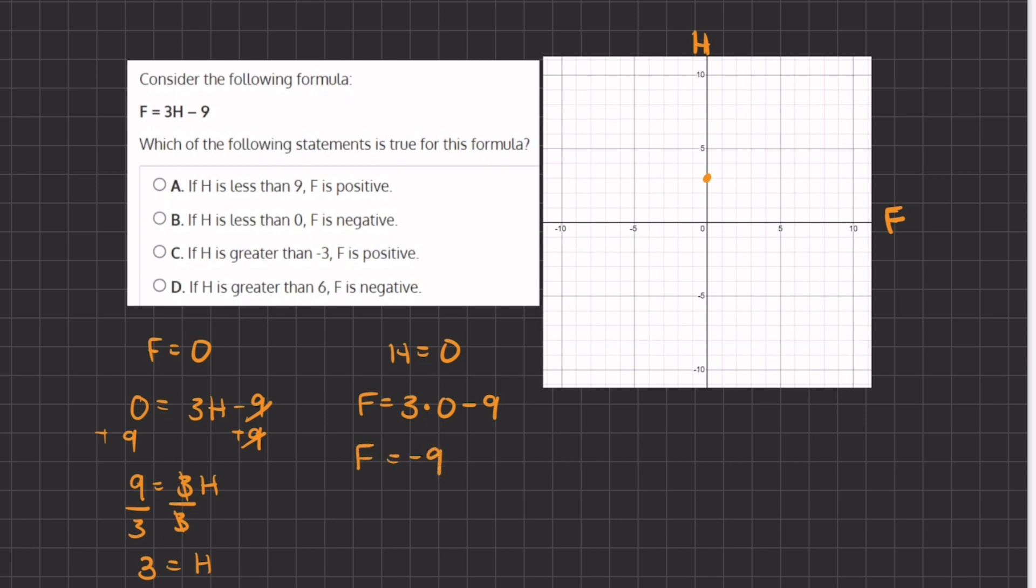Now if we plot this, we are going to move over negative nine and zero. Now let's connect these two points together and this will be our linear function. So now let's read our answers.